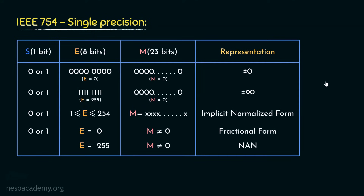Let's now observe what the different bit sequences of the 32-bit patterns mean. When the exponent bits are all zeros, that is E has the value 0 in decimal, and at the same time if the mantissa bits are also all 0 — that is all 23 bits of the mantissa are 0 — that sequence might represent either positive 0 or negative 0, based on the sign bit. This is similar to one's complement representation, where we also had two different zeros.